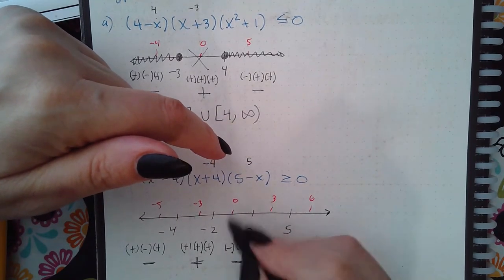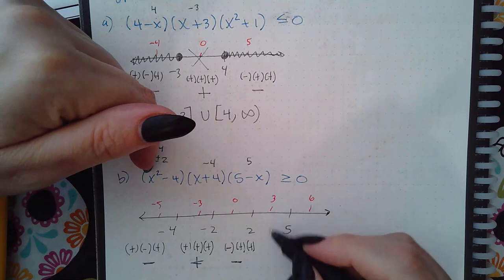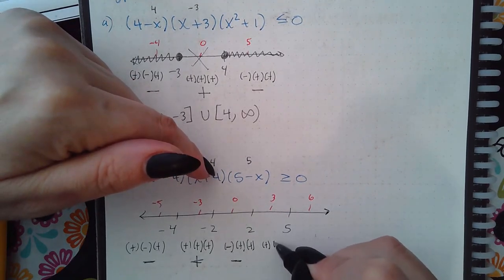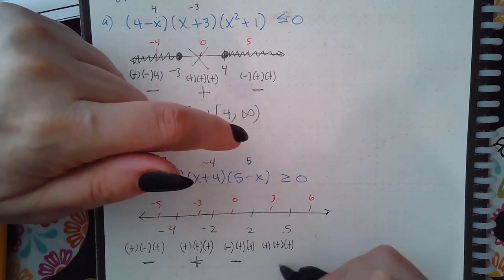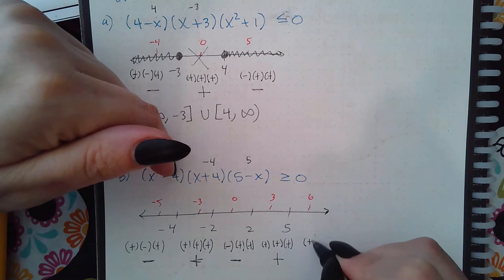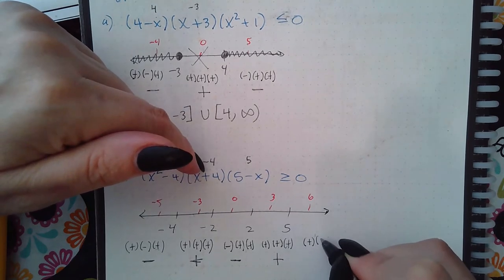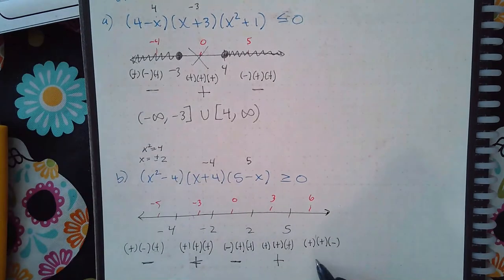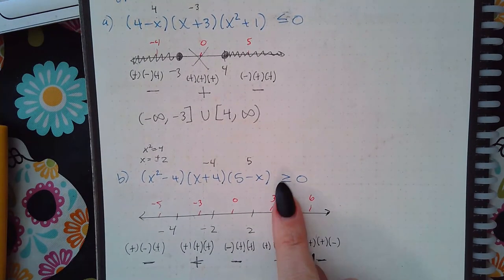Now plugging in 3, 9 minus 4 is positive, 3 plus 4 is positive, 5 minus 3 is positive. 6 squared is 36 minus 4 is positive, 6 plus 4 is positive, and 5 minus 6 though is negative, so I get a negative.